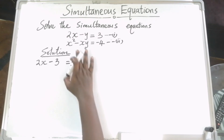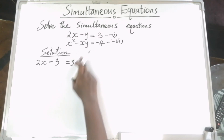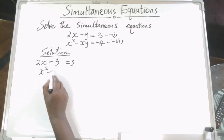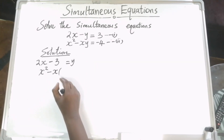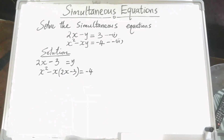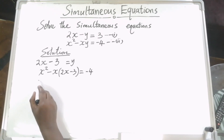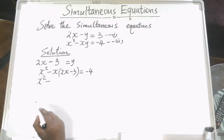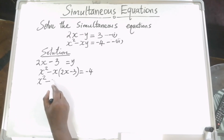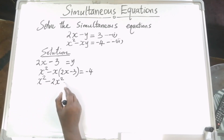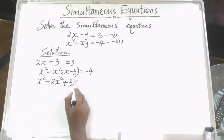We're going to use this in our second equation and substitute the value of y, so that x squared minus x times y, whereby our y is 2x minus 3, will be equal to minus 4. Then we remove brackets to get x squared minus 2x squared minus x times minus 3, which is plus 3x.